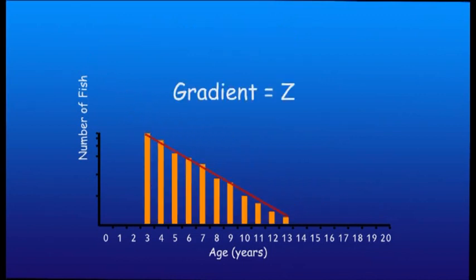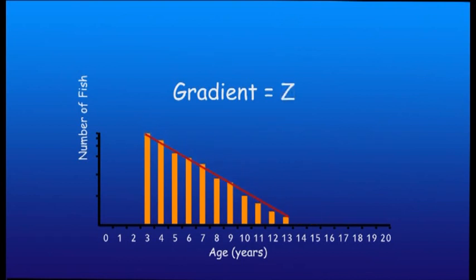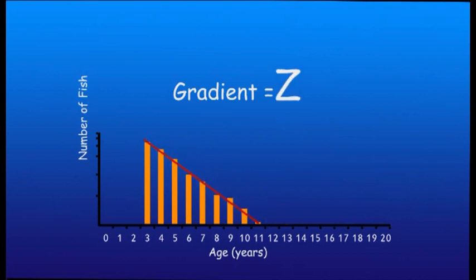Going back to the catch curve for our tiger flathead example: if we only took into account natural mortality, our curve would look like this. If we take into account fishing mortality as well, the curve changes — the whole curve gets lower and its angle changes, because the stock's mortality rate increases. If we further increase fishing mortality, you can see the line getting steeper and steeper. You can also see that there are relatively fewer old fish in the population, which is one of the indicators that a stock is under considerable fishing pressure.